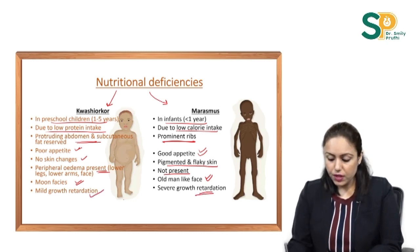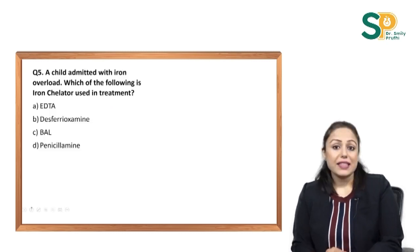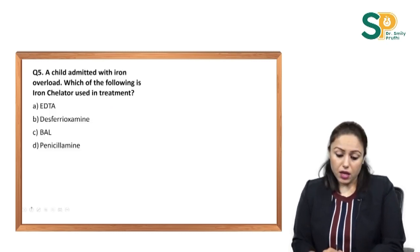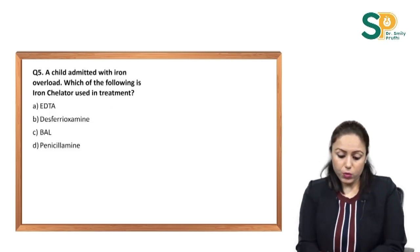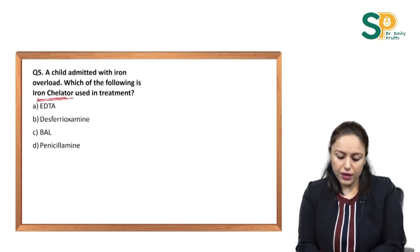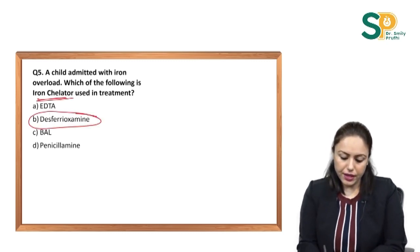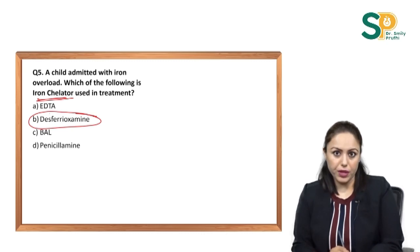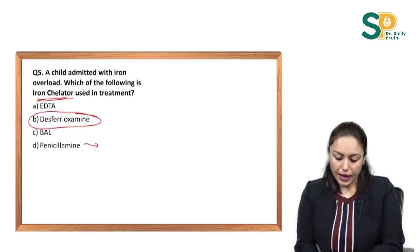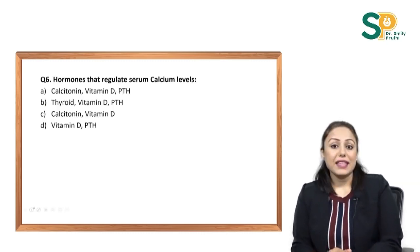Next: a child admitted with iron overload — which of the following is an iron chelator? The iron chelator is desferioxamine, and penicillamine is a copper chelator.